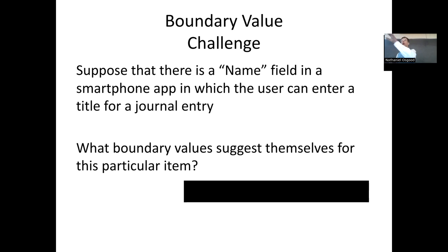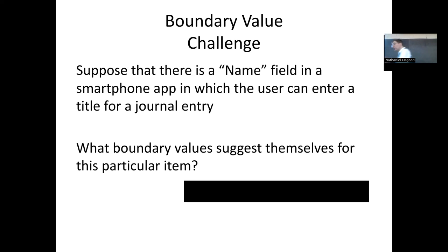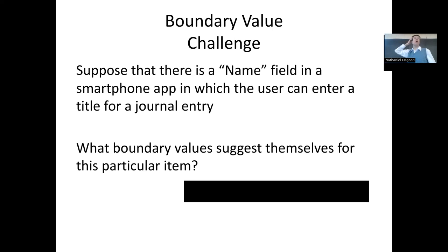There are programming conventions where variable names use words like 'limit' compared to 'max,' where 'max' is a value that can be handled and 'limit' is the value just above that — one beyond the max — implying it's not handled. This is a good way to remind programmers not to be fuzzy about whether the boundary value gets handled or not. Another boundary is the empty string, which is a boundary value for the minimum.